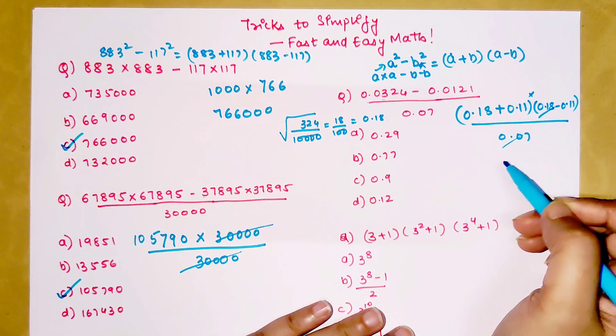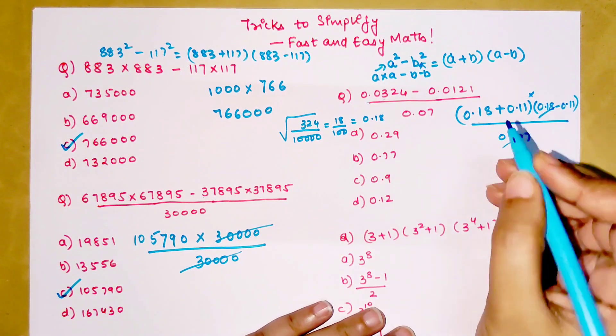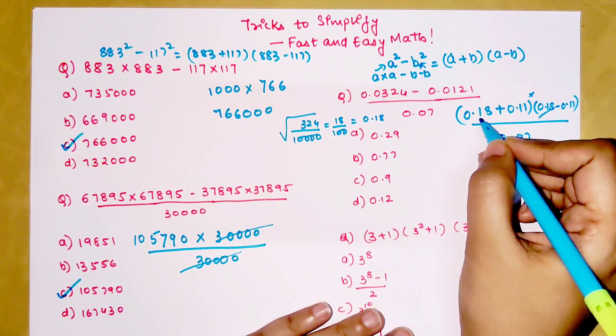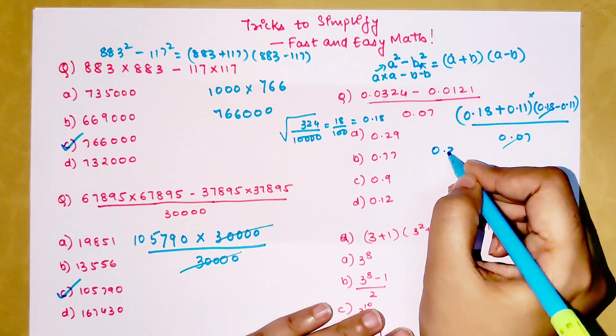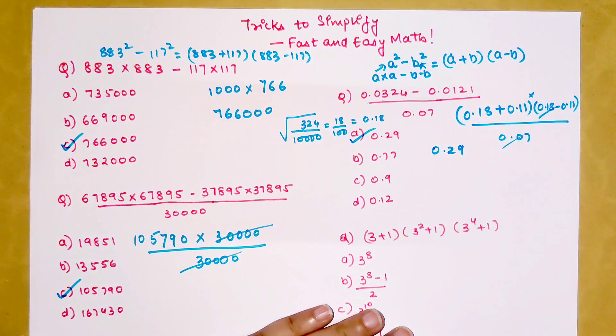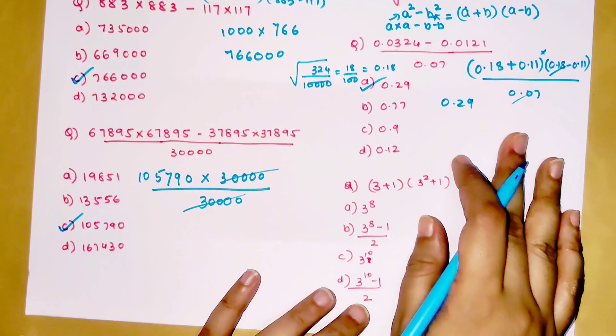Now you just have to add 0.18 by 0.11, so you are getting 0.29. Option A is your right answer.